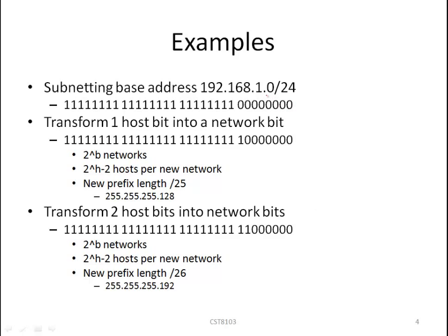Here is an example of subnetting. In this particular case we have a base address of 192.168.1.0/24. In the first case, if we borrow or transform one host bit into a network bit, we've created two new networks. In the second case, if we borrow two bits, we've created four new blocks.